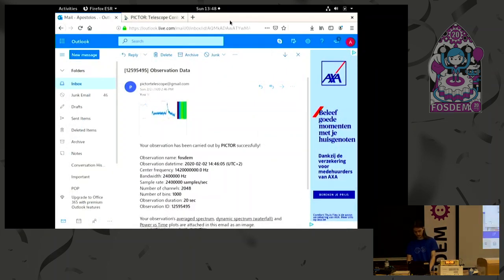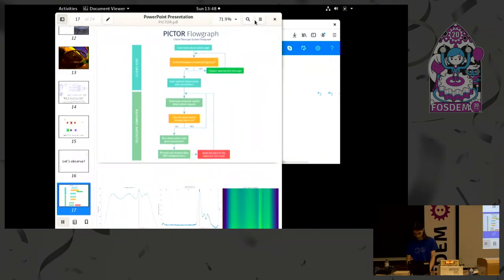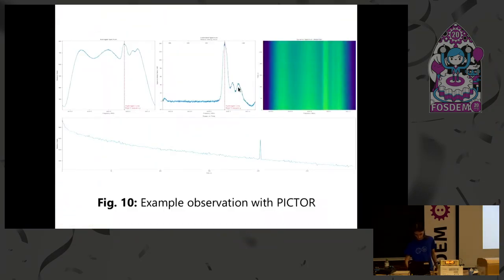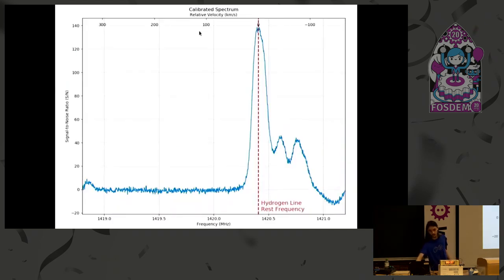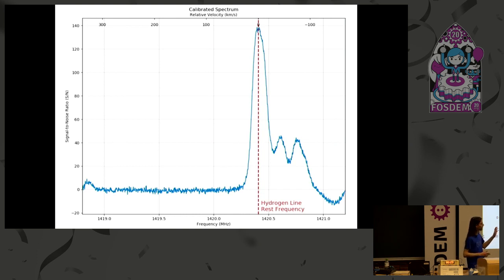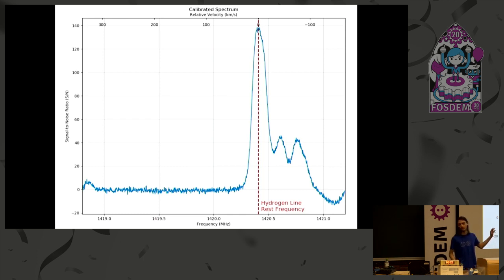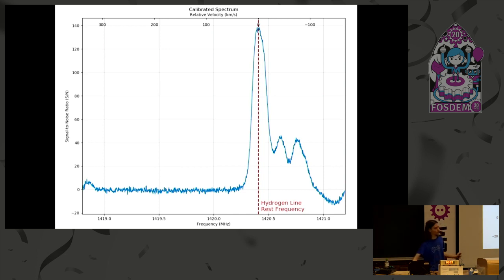This is another example observation taken at an even better time. You can see three peaks here — each of those peaks corresponds to a different spiral arm in our galaxy. So with just one observation, which you can get such data in like 60 seconds, you have detected three unique spiral arms of the galaxy. You have proven that the Milky Way is indeed a spiral galaxy — which is not very easy to prove using optical measurements.